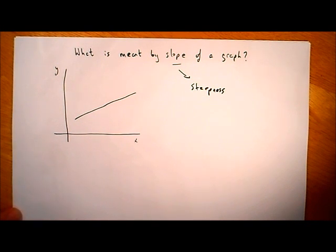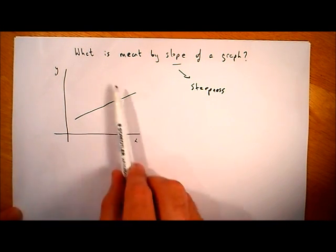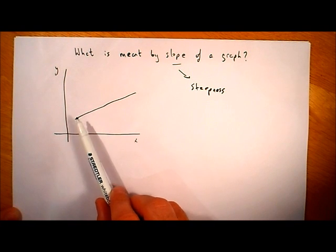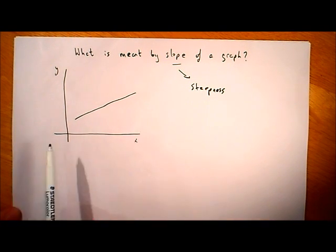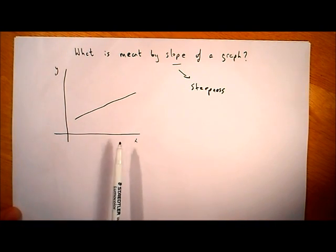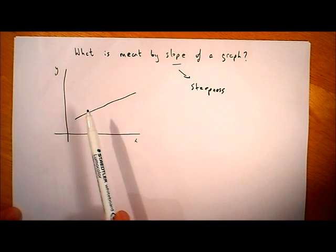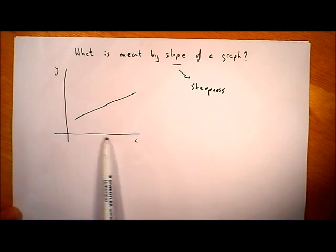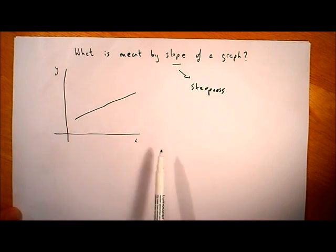When I talk about a graph, here's a graph of a straight line — so the graph is this part of it here. Sometimes people confuse the axis with the graph. This is the y-axis and this is the x-axis, but the actual graph is this part here.